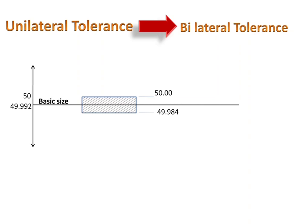Now the question is: why do we need to convert between unilateral and bilateral tolerance systems? In some manufacturing processes, the probability of variation in dimension occurs on both sides, but the tolerance is given only on one side — that is the unilateral system. Then we will have to change it to bilateral tolerance system, and the machine setting will be done at the basic size of that tolerance system. So by shifting the basic size only, we can convert between unilateral and bilateral tolerance systems.